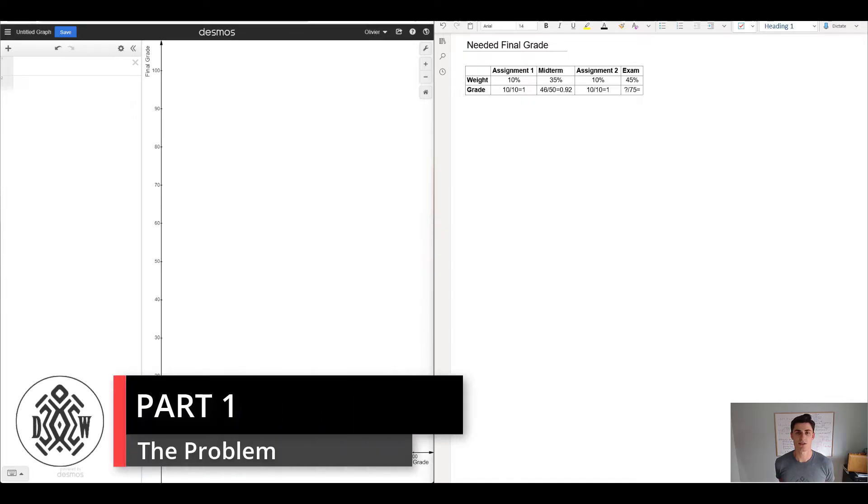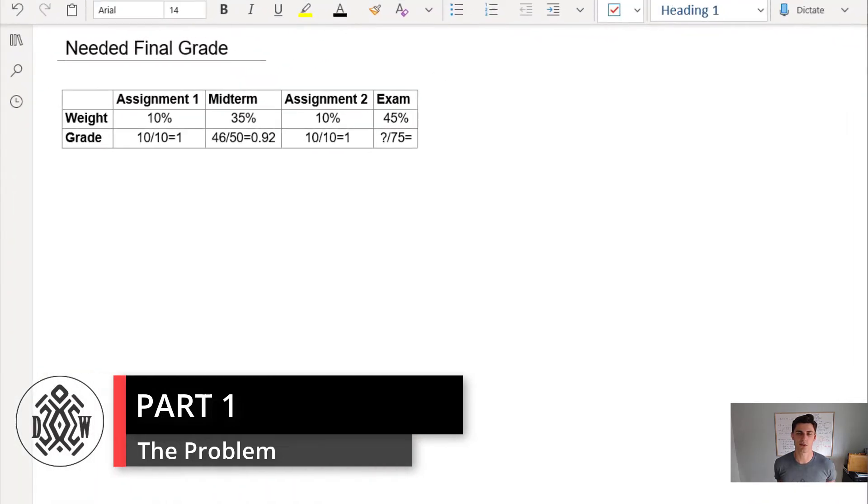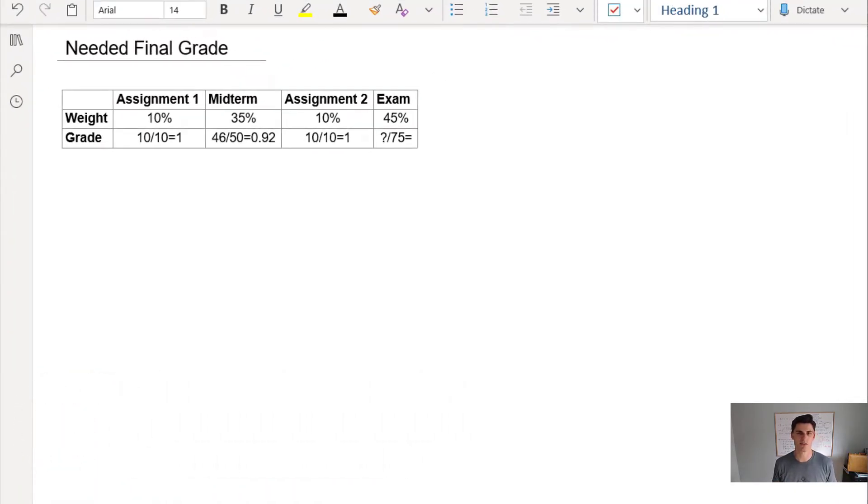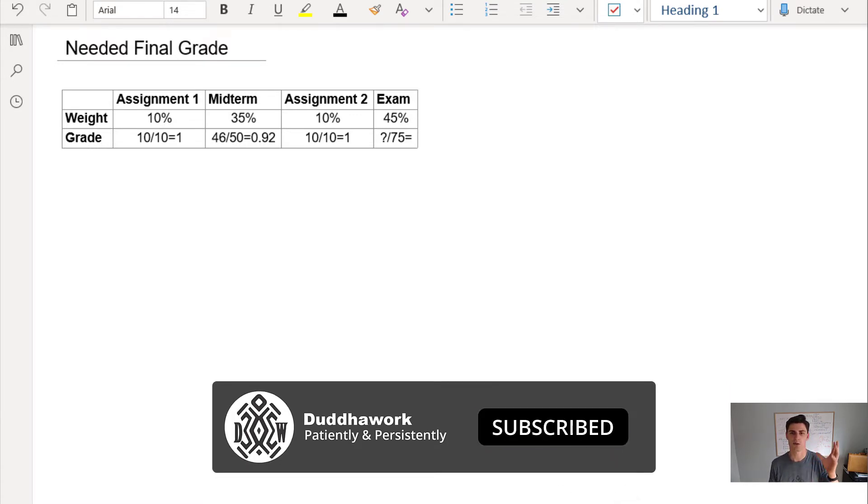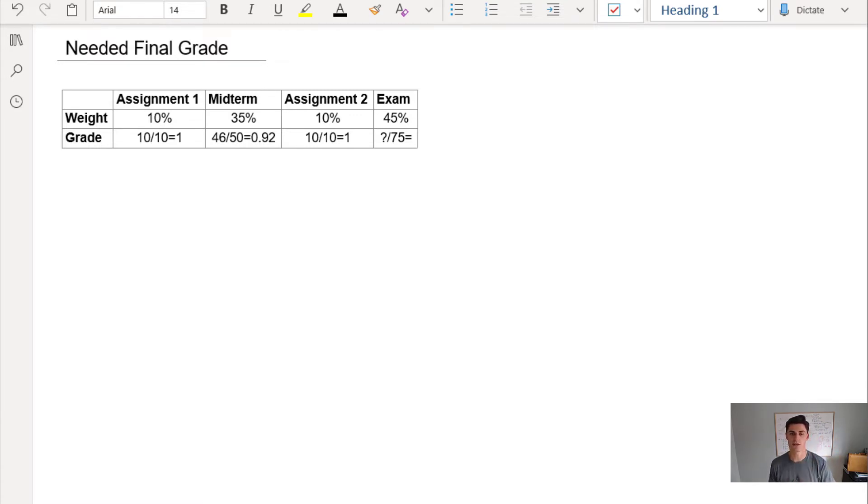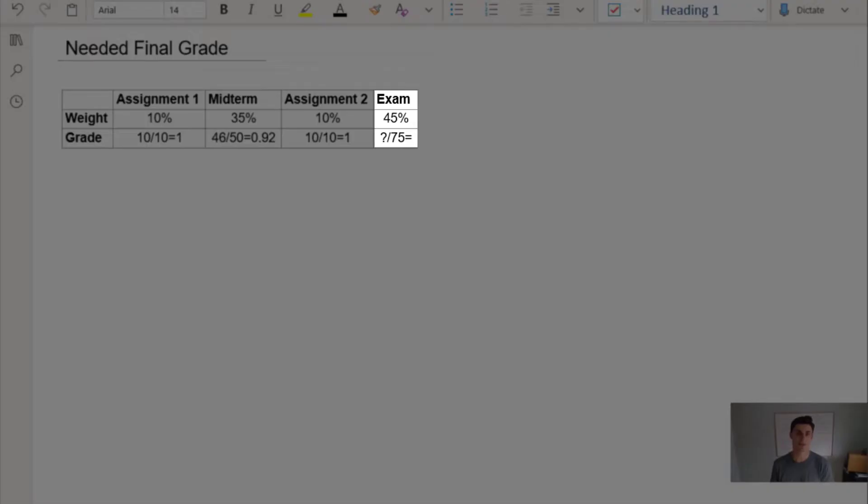This is an example from the organizational psychology course I'm taking this summer to get ahead in the teaching salary grid. The grades are weighted as shown on screen: the first assignment is worth 10 percent, there's a midterm with 50 multiple choice worth 35 percent, another assignment worth 10 percent, and the exam is worth 45 percent out of 75 questions.